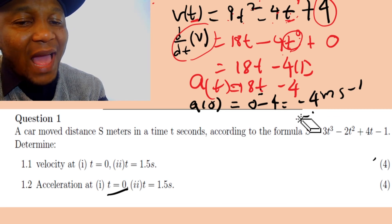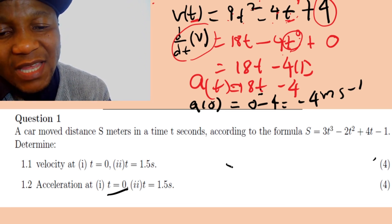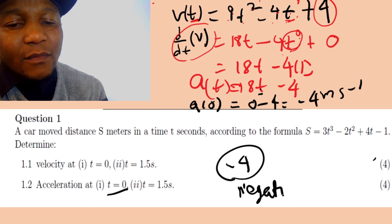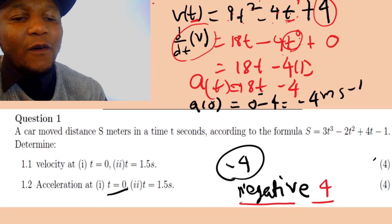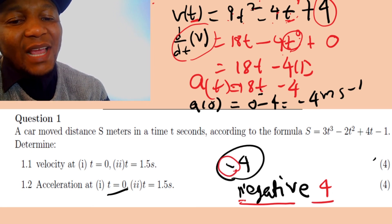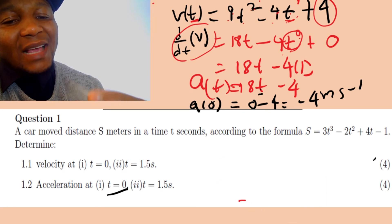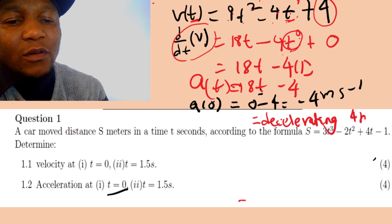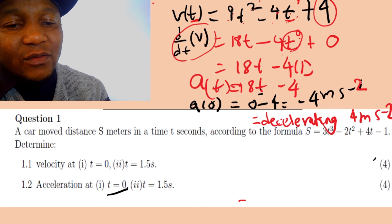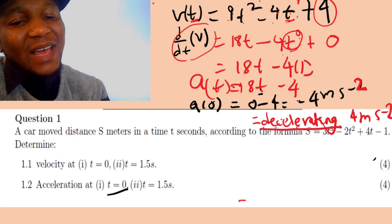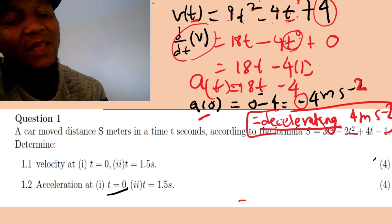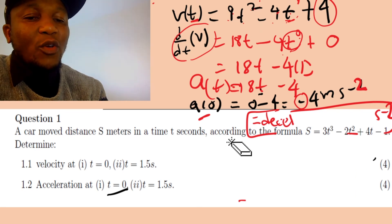You can write this as acceleration equals negative 4 m/s², or alternatively you can say the object is decelerating at 4 m/s². If you write 'decelerating', do not write the negative sign again — because the word decelerating already tells you the direction. Both forms are acceptable, but be consistent.